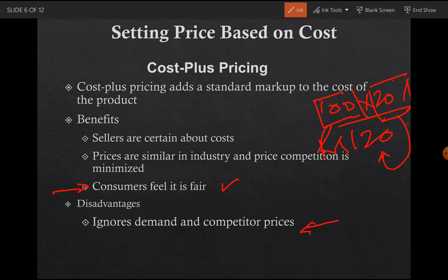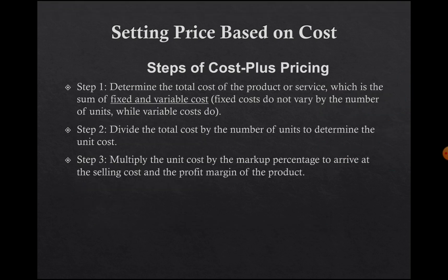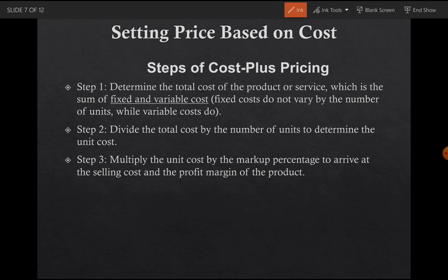There are three steps to calculate cost-plus pricing. Step one: determine the total cost of production or services, which is the sum of fixed and variable costs. Step two: divide the total cost by the number of units to determine the unit cost. Step three: multiply the unit cost by the markup percentage to arrive at the selling price and profit margin of the product.